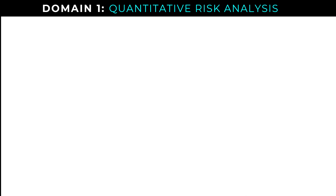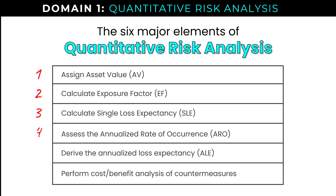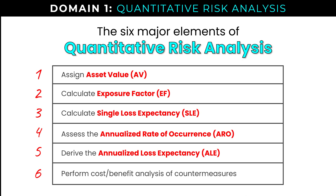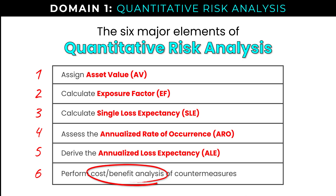If you look at the official CISSP study guide, you will find a chart of the six major elements of quantitative risk analysis. We need to understand asset value, exposure factor, single loss expectancy, annualized rate of occurrence, and annualized loss expectancy, as well as being able to perform a cost-benefit analysis. The study guide says word for word that the concepts you must know for the exam are those same six items, and we're going to cover them all.